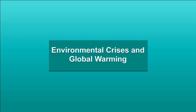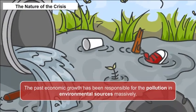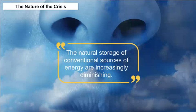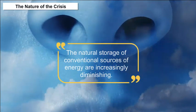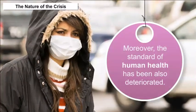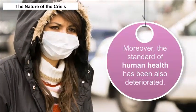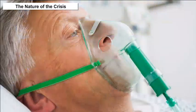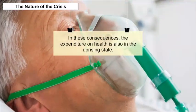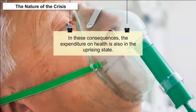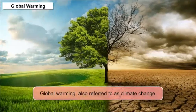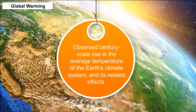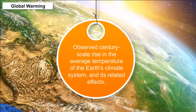Environmental Crisis and Global Warming: Past economic growth has been responsible for massive pollution of environmental sources. The natural storage of conventional sources of energy are increasingly diminishing. Moreover, the standard of human health has also deteriorated. More than 70% of the water resources in India are polluted at present, and as a consequence, expenditure on health is also rising. Global warming, also referred to as climate change, is the observed century-scale rise in the average temperature of the Earth's climate system and its related effects.